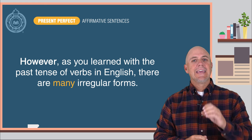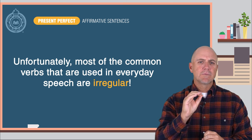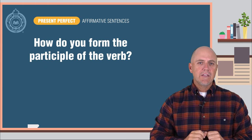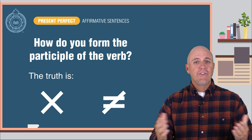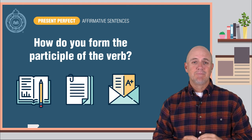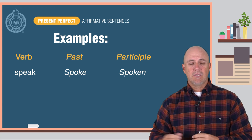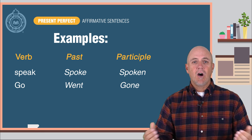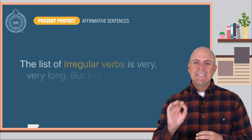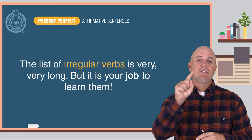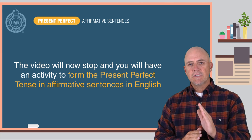However, as you learned with the verbs in the past tense, there are many irregular forms. Unfortunately, most of the common verbs used in everyday speech are irregular. So if the verb is irregular, how do you form the participle of the verb? That's a good question. And the truth is, there is no answer — they are all different. You simply have to learn, study, and memorize them. Sorry. Here are some examples of irregular verbs: speak — in the past is spoke, the participle is spoken. The verb go — in the past is went, in the participle is gone. The list of irregular verbs is very, very long, but it is your job to learn them. The video will now stop and you will have an activity to form the present perfect tense in affirmative sentences in English.